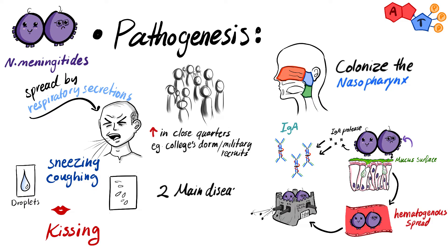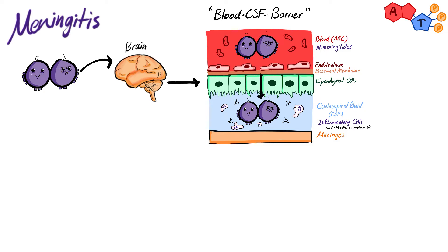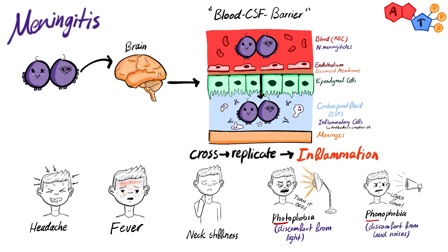Neisseria meningitidis causes two main diseases: meningitis (meningococcal meningitis) and disseminated meningococcemia. For meningitis, it travels to the brain, crosses the blood-CSF barrier, enters the cerebrospinal fluid, replicates, and causes inflammation of the meninges. Patients present with headache, fever, neck stiffness, photophobia (discomfort in the presence of light), and phonophobia (discomfort in the presence of loud sounds).